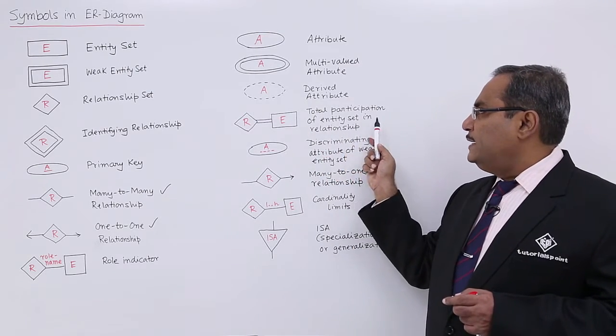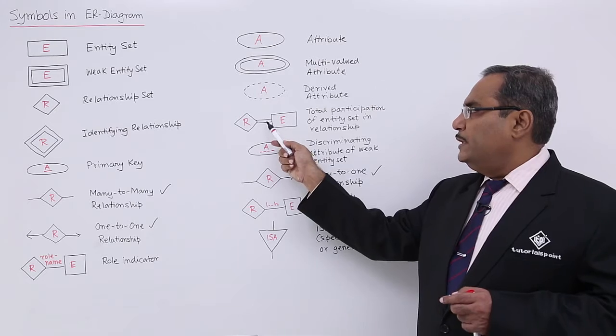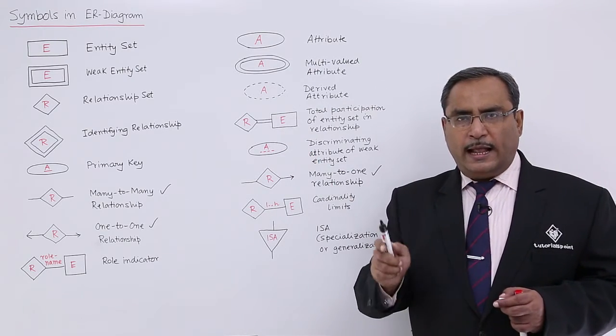Total participation of entity set in the relationship will be denoted by double lines between the relationship and the entity.